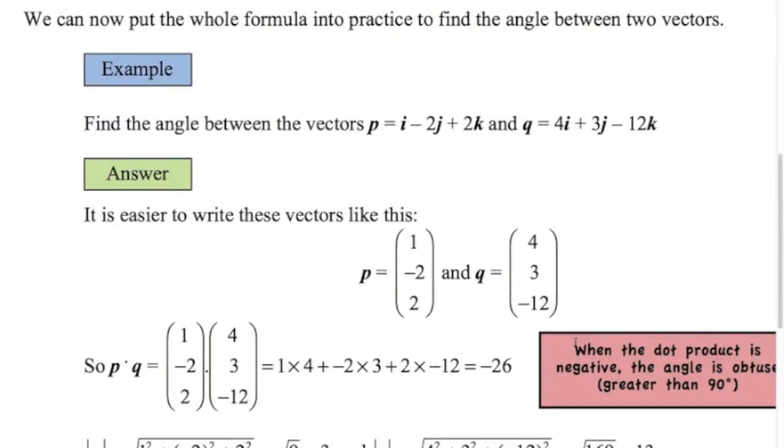Now we're going to put it all together to find the angle between two vectors. And this is the one you have to be really good at. So got two vectors here. We want to find the angle. So the dot product first, that's the left hand side of the formula. I've done that a few times now. One times four, negative two times three, two times negative 12 gives us negative 26. So my advice is if you're given the vectors like this, write them out like this in component form. It just makes it easier, I think, to do the dot product.